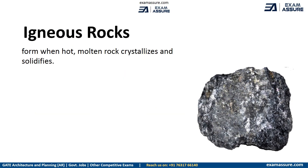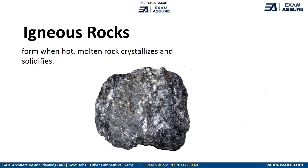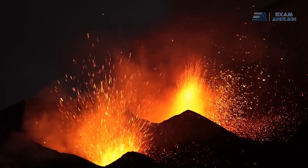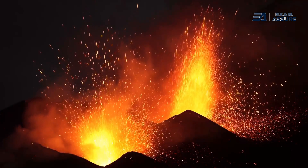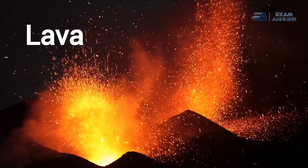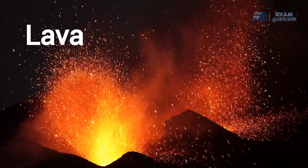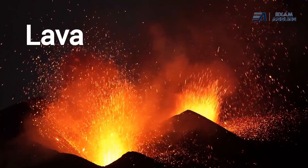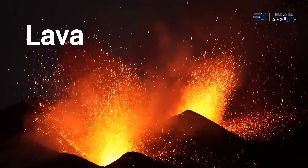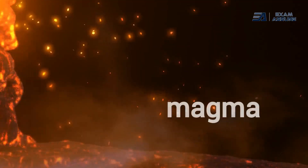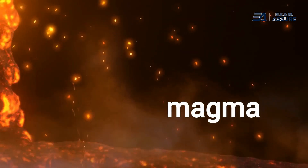So let's talk about igneous rocks. Igneous rocks are formed when hot molten rock crystallizes and solidifies. The melt originates deep within the earth near active plate boundaries or hotspots, then rises towards the surface.